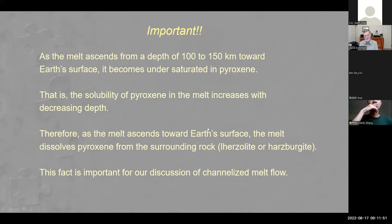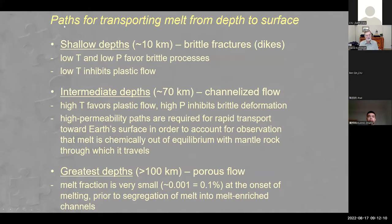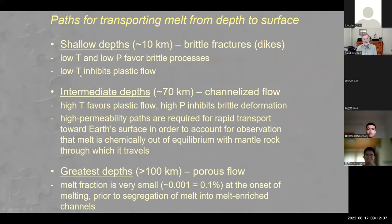Near the surface, brittle fractures occur. The paths for transporting melt from depth to the surface at shallow depths involve brittle fracture and formation of dikes. This can happen because the temperature of the rock is relatively low and the confining lithostatic pressure is small — conditions that favor brittle fracture. Low temperature inhibits plastic flow. So at the top we look at brittle processes.